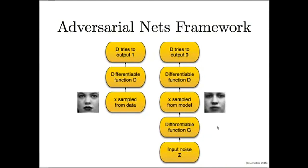Using game theory analysis techniques, we can actually prove that there is an equilibrium to this game where the generator makes data that looks identical to the training data and the discriminator assigns probability one half to every input being real or fake.